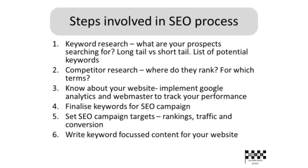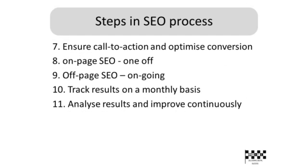Write keyword-focused content for your website and make sure the keywords are included in all your content. Ensure you have a clear and simple call to action that stands out, and optimize the conversion of your website. Once you have all the basics ready, start doing all the on-page and off-page SEO. Use analytics to track your results, then analyze and continuously improve your keywords and your ranking. That's the steps involved in a successful SEO.